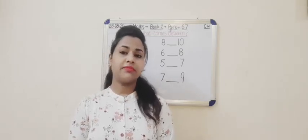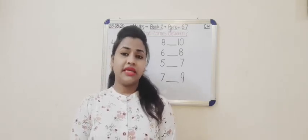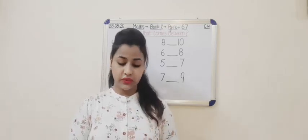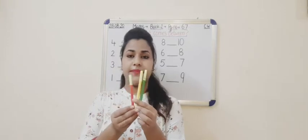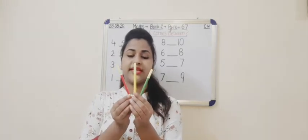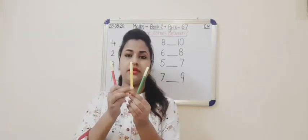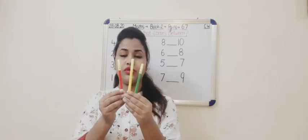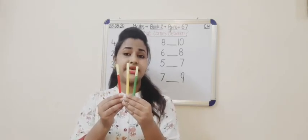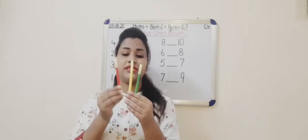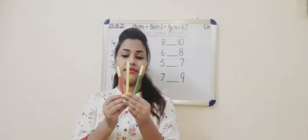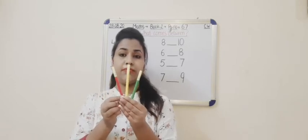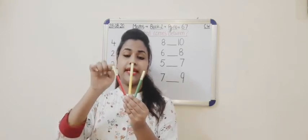So I will show you something — you have to identify which thing comes in between. Here I have three sketch pens: red, yellow, and green. Could you please tell me which sketch pen is between the red and green one? Yes, that is the yellow one. Yellow one is between the red and green.